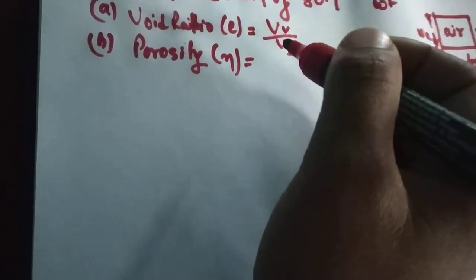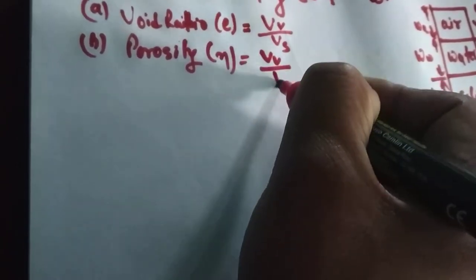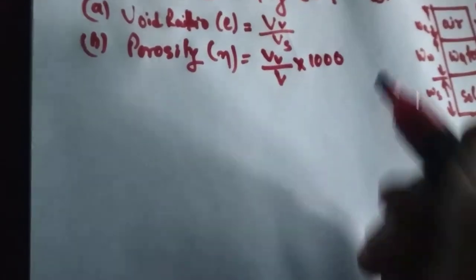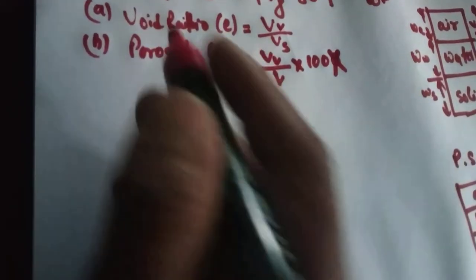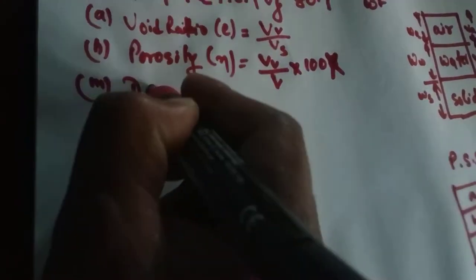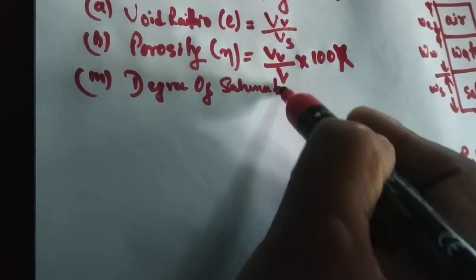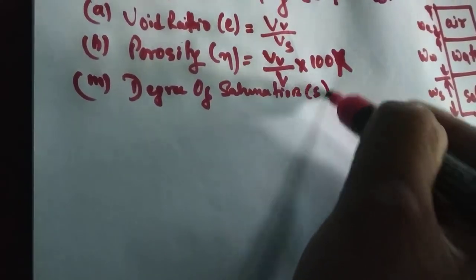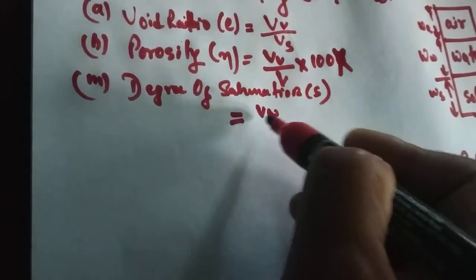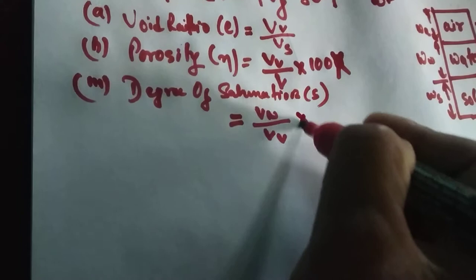This can be expressed in percentage, so multiply by 100. Now degree of saturation, S, equals the ratio of volume of water to the volume of void. This can be expressed in percentage by multiplying by 100. Volume of water can vary from 0 to volume of void.